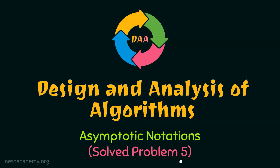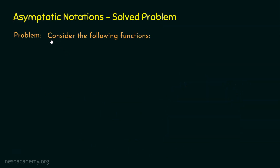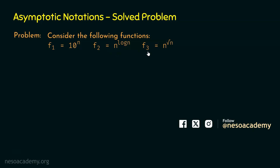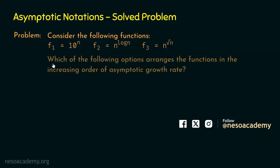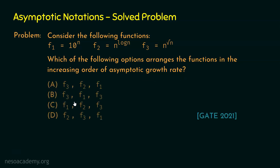Let's solve problem number 5 on asymptotic notations. Consider the following functions: f1 is equal to 10 to the power n, f2 is equal to n to the power log n, and f3 is equal to n to the power square root of n. Which of the following options arranges the functions in the increasing order of asymptotic growth rate? We need to identify the correct option.